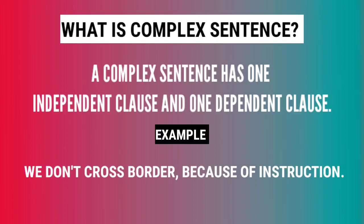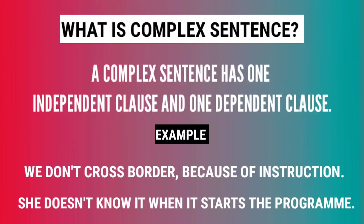In a complex sentence we need two clauses — one independent and one dependent. For another example: 'She doesn't know it when the program starts.' Here 'she doesn't know it' is the independent clause, and 'when the program starts' is the dependent clause. So these are complex sentences.